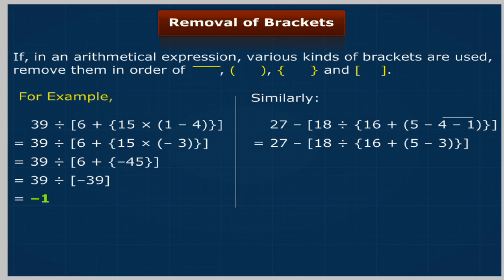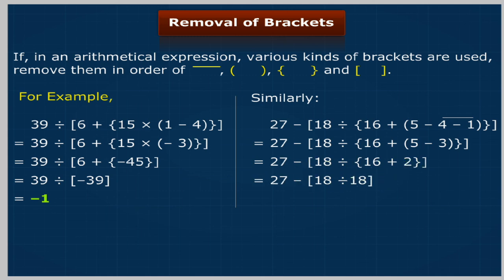Similarly, 27 - [18 ÷ {16 + (5 - 3)}] = 27 - [18 ÷ {16 + 2}] = 27 - [18 ÷ 18] = 27 - 1 = 26.